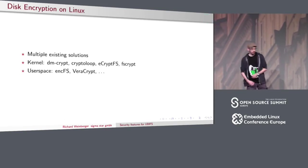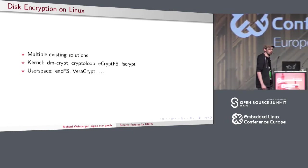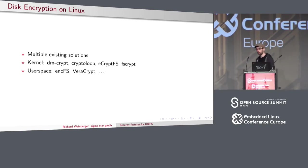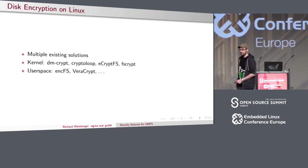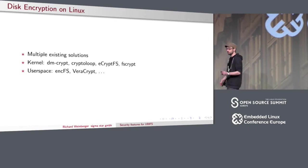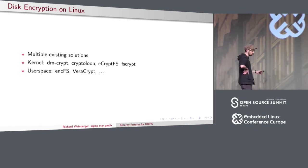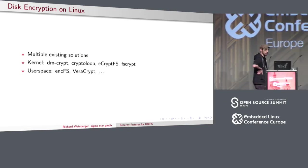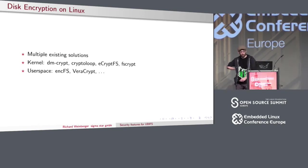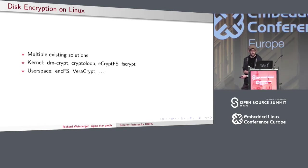What kind of encryption mechanisms do we already have on Linux? On the kernel level, we have the well-known DMCrypt, we have the older CryptoLoop, we have ECryptFS, and these days we have FSCrypt, which I will talk more on later. In user space, we have EncryptFS and VeraCrypt, which is the fork of TrueCrypt and is implemented in user space on Linux. So this is what we currently have.